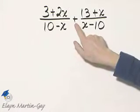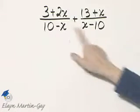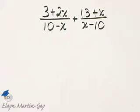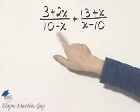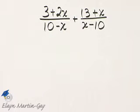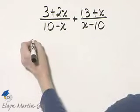Here the operation is addition. We can only add rational expressions if the denominators are exactly the same. Notice in this case they are opposites of each other, so we're going to take advantage of that.